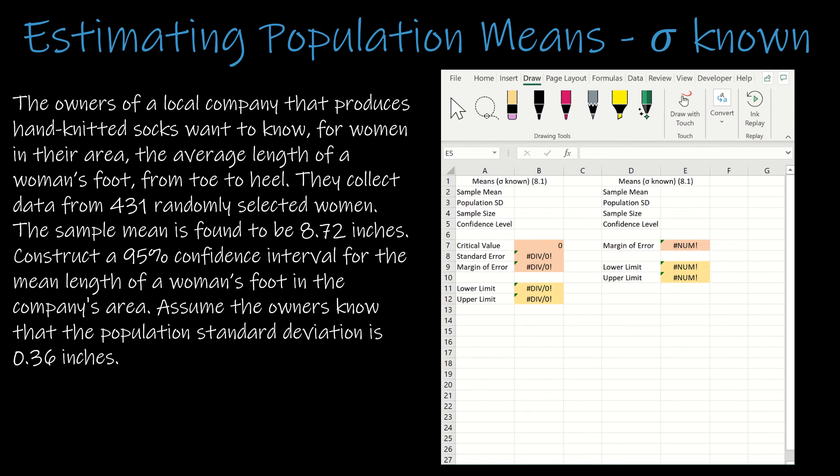So we're dealing with a local company that produces hand-knitted socks, and they want to know for women in their area, the average length of a woman's foot from toe to heel, which makes sense. They need to know how big to make their socks. They collect data from 431 randomly selected women. So n is greater than 30. They are randomly selected. So central limit theorem can be used. We've checked conditions. 431 is our sample size. So 431.